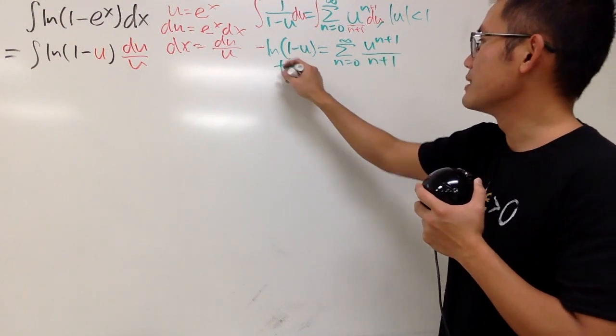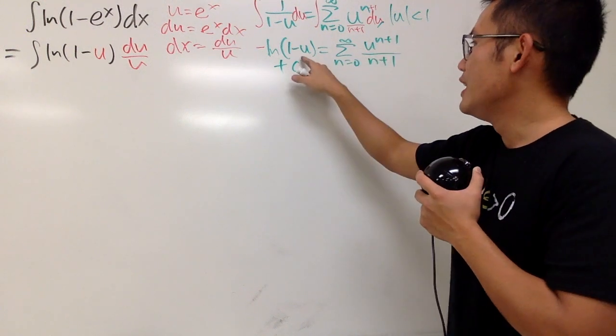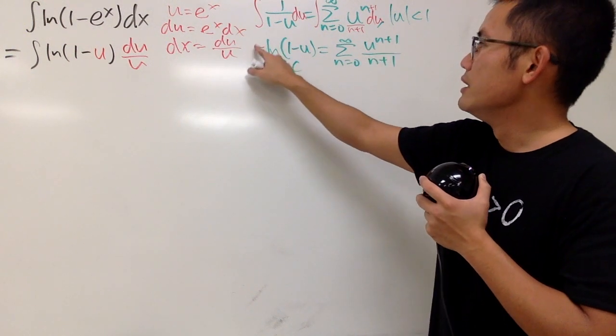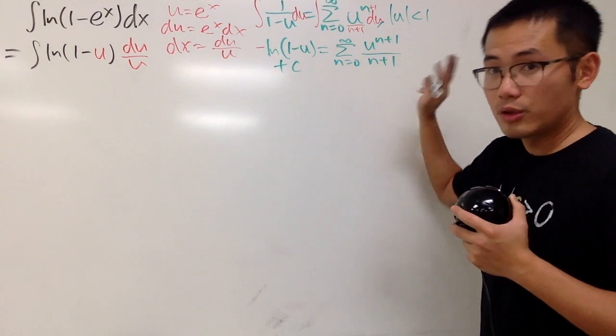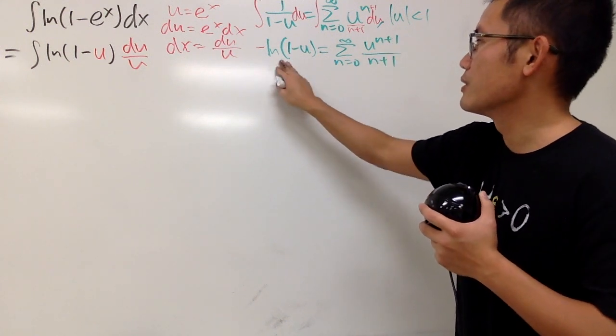Very nice. And technically, I should put down plus c somewhere. But if you put u equal to 0, this is 0 plus c. And then, if you put 0, this whole thing is going to be 0. So, in fact, c is equal to 0. So c doesn't matter.